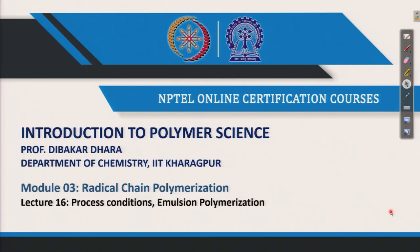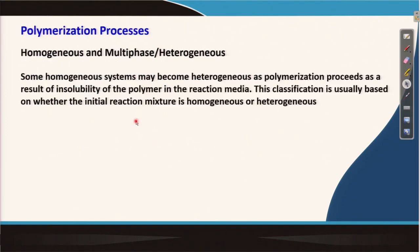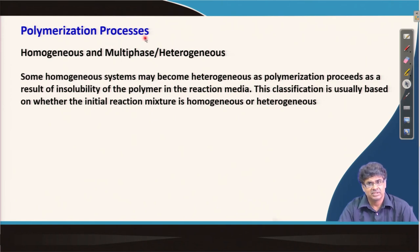Welcome back. In this lecture 16, I will discuss different process conditions for synthesizing polymers and also talk about emulsion polymerization in some detail. These are the topics I plan to cover. We have learned how to synthesize polymers by radical chain polymerization. In this lecture, I will explain different polymerization processes — not restricted only to radical chain polymerization; any polymerization process can be carried out by these methods.